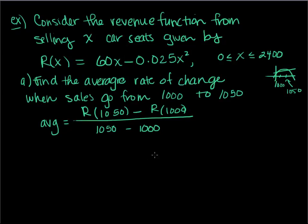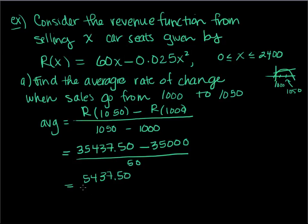So my average rate of change is going to equal the revenue that I would get from 1,050 minus the revenue from 1,000, divided by my change in actual car seats. So I'm going to plug in 1050 minus 0.025 times 1050 squared. I'm going to get something on the top here about 35,437.50. And then plugging in 1,000 that's just 35,000, divided by 50.